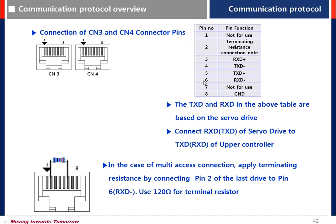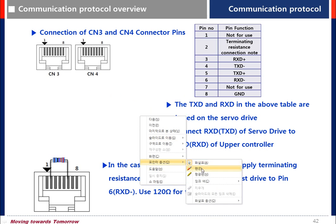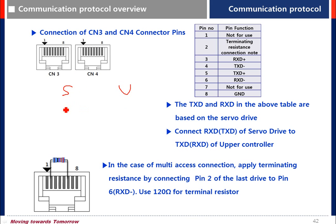This is the pin number and pin function. The pin function is based on the servo drive, so connect RSD of the servo drive to TXD of the host controller. Connect RSD+ to TXD+ in the same way. At the last drive, connect a terminal resistor of 120 ohm between pin number 2 and 6.